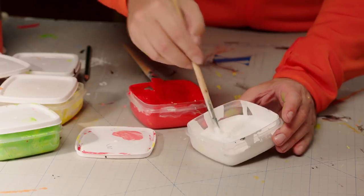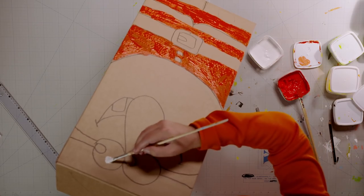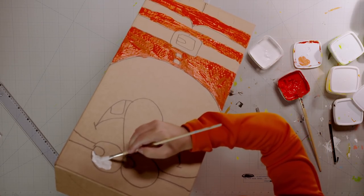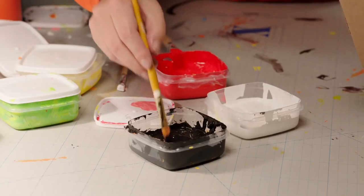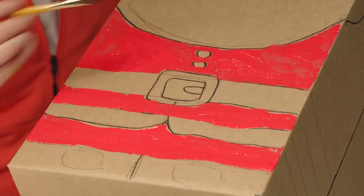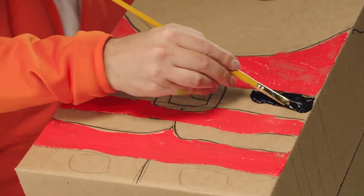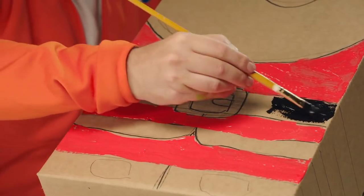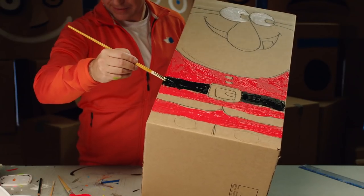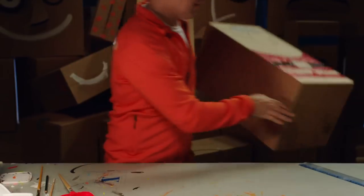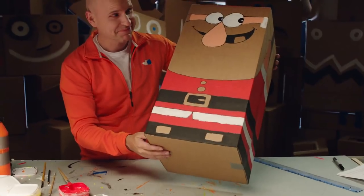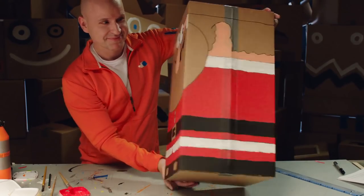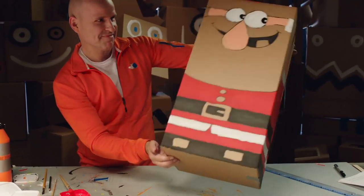Use some white for the eyes. And black for his belt. Here's one that I painted earlier. That's the first step done, and he's starting to look pretty good.